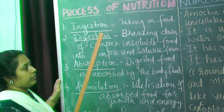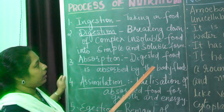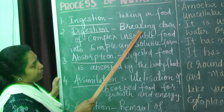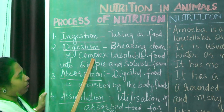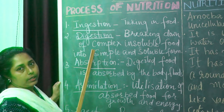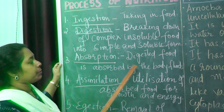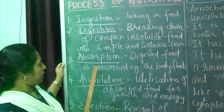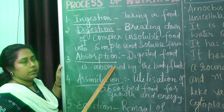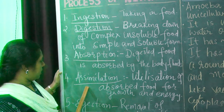The second step is digestion. We eat very complex nutrients like carbohydrates, fats, vitamins, minerals, etc. These foods are complex and insoluble, so they must be broken down. The process of breaking down complex insoluble food into simple and soluble food is known as digestion. Third step is absorption — the digested food is absorbed by the body through body fluids. In human beings, digestion completes in the small intestine and is absorbed to all parts of the body.